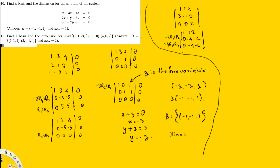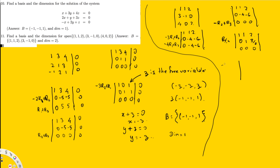We notice the second and third rows are the same, so multiplying the second row by -1 and adding to the third gives 0 0 0. We now have 1 1 2 / 0 -4 -6 / 0 0 0. Simplifying the second row by dividing by -4 gives 0 1 3/2. Then we eliminate the 1 in the first row by computing -R2 + R1, giving 1 0 (4/2 - 3/2) = 1 0 1/2.